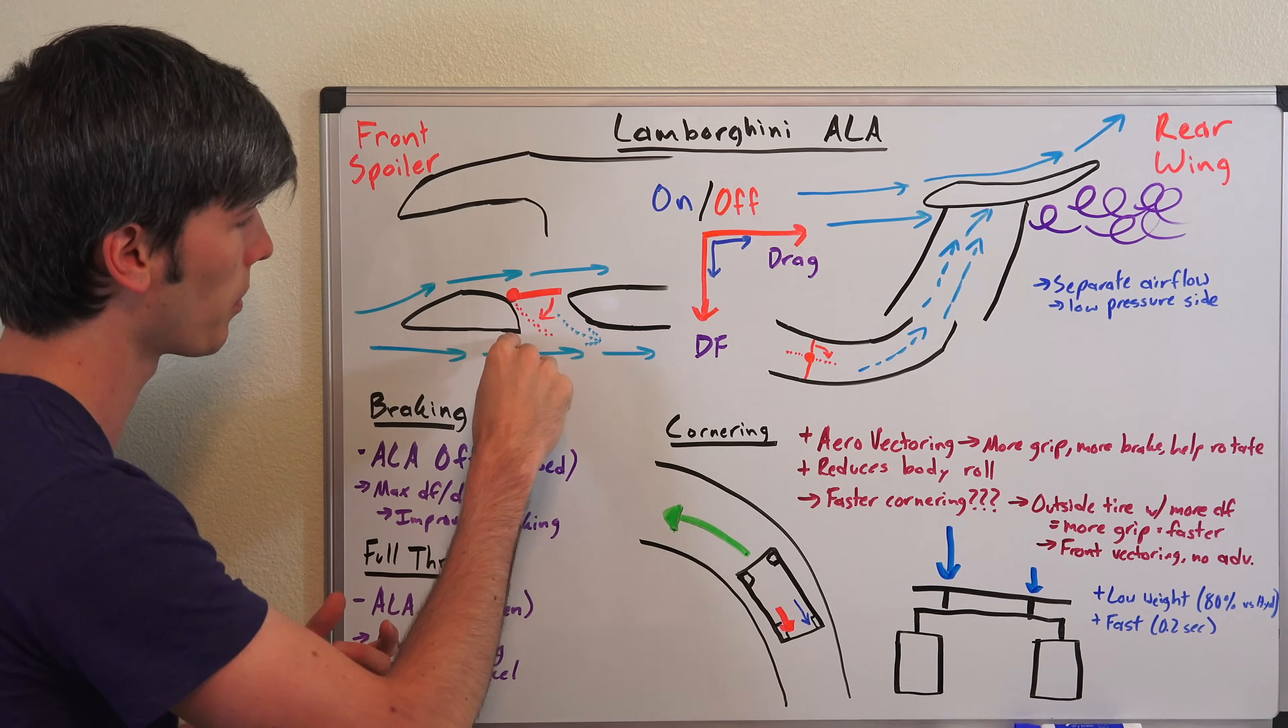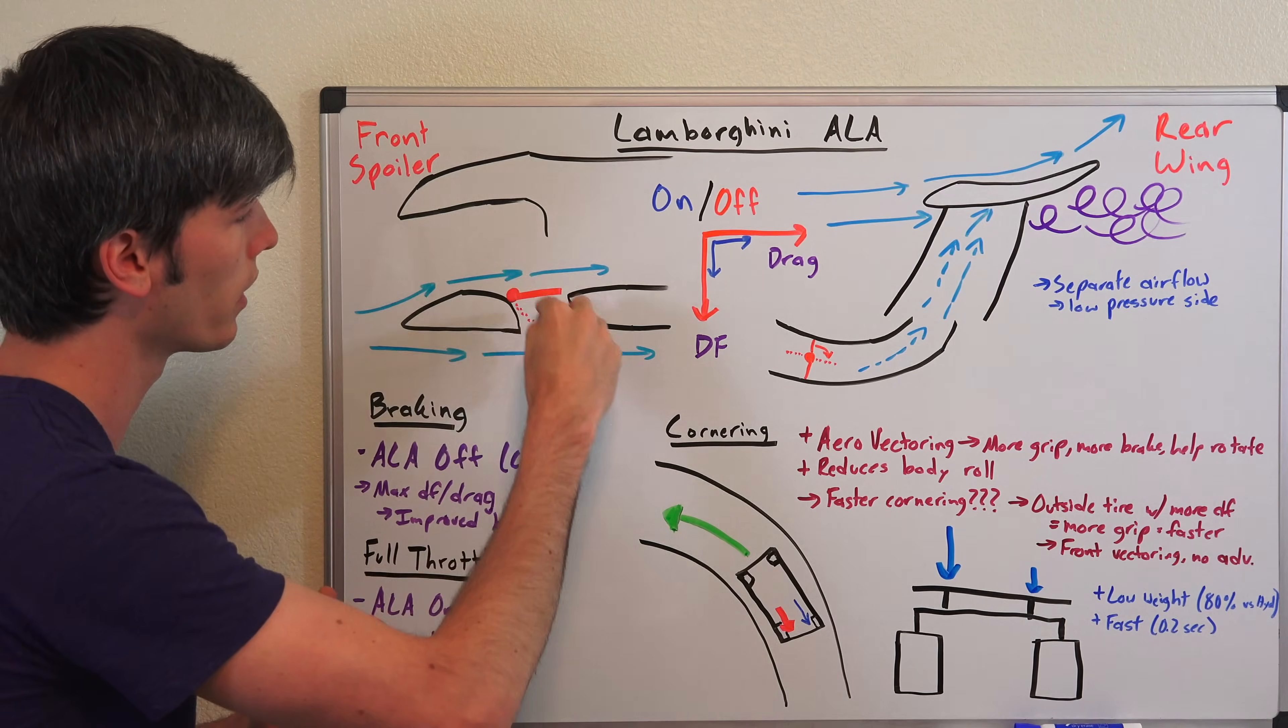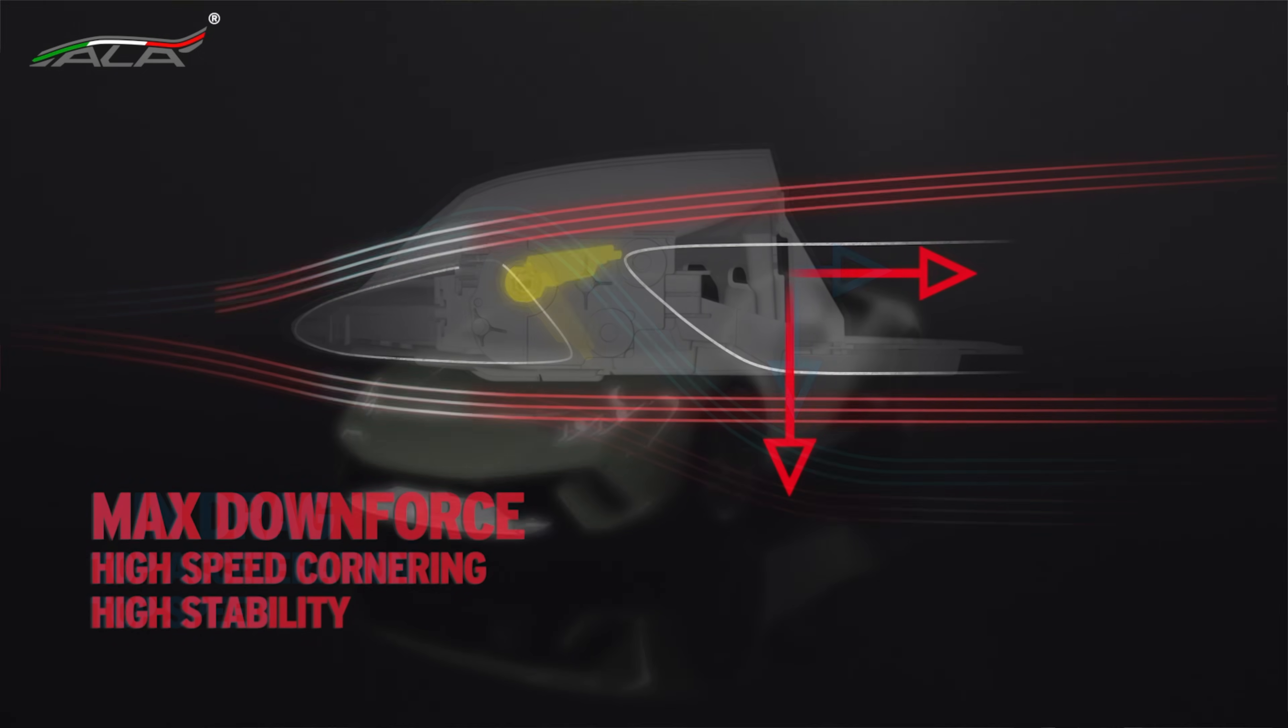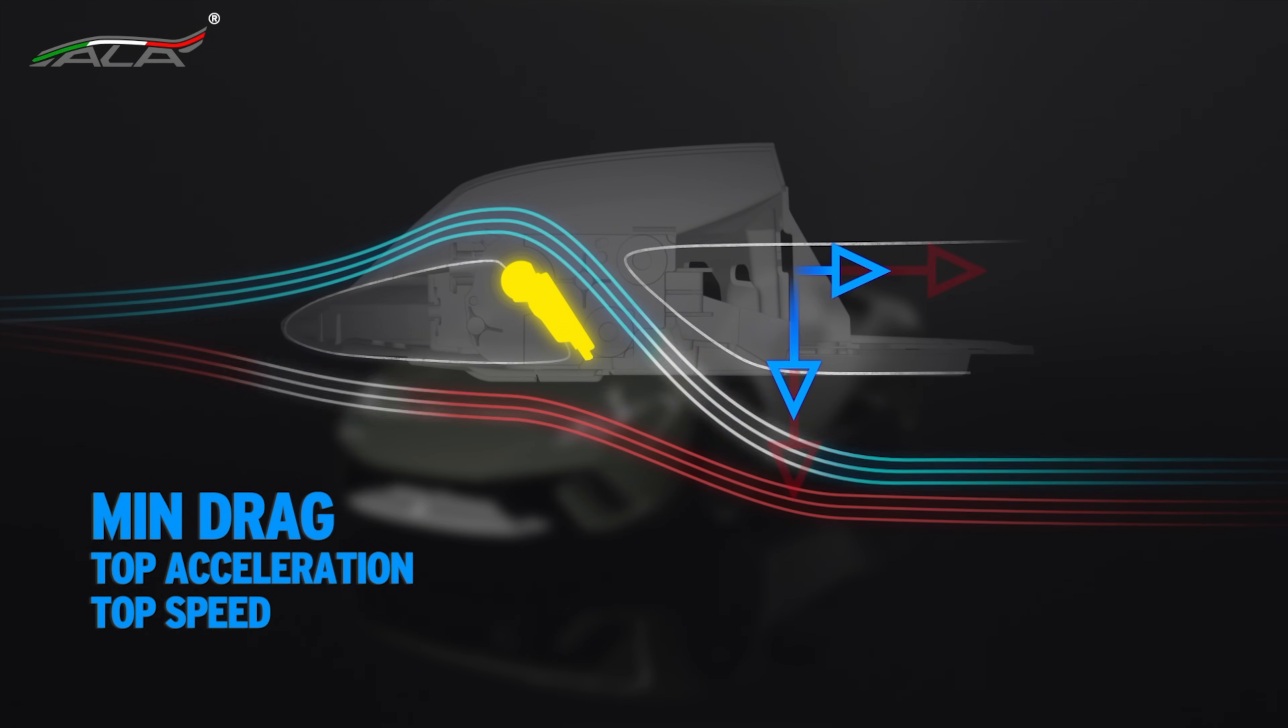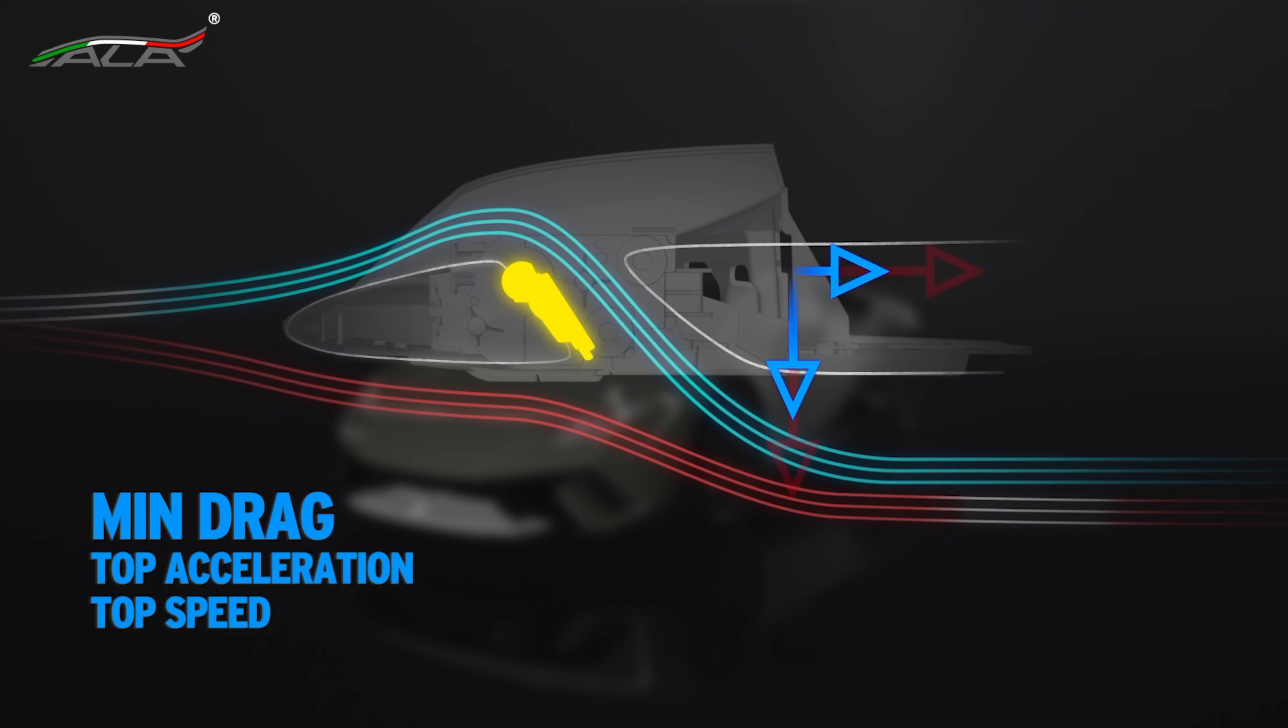Now you have this little hinge right here which opens up this flap and allows that air that otherwise would build a high pressure area to escape underneath the vehicle. That's going to reduce the amount of drag that you have and also increase the amount of lift. So you're going to reduce your downforce and reduce your drag, and there are certain scenarios where this is ideal.